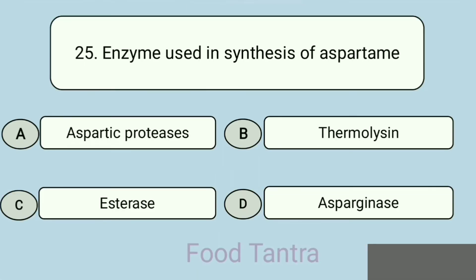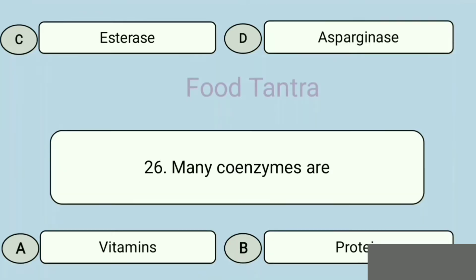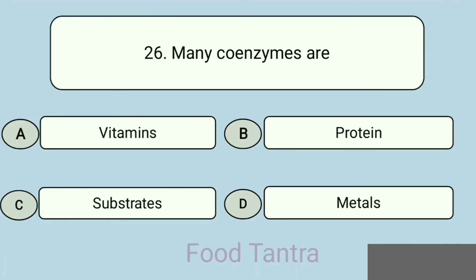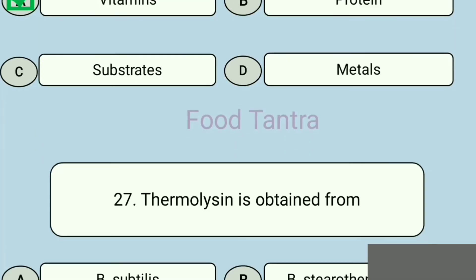Question 25: Enzyme used in the synthesis of aspartame — Option A: Aspartic proteases. Option B: Thermolysin. Option C: Esterase. Option D: Asparaginase. Correct answer: Thermolysin. Question 26: Many coenzymes are — Option A: Vitamins. Option B: Proteins. Option C: Substrates. Option D: Metals. Correct answer: Vitamins.